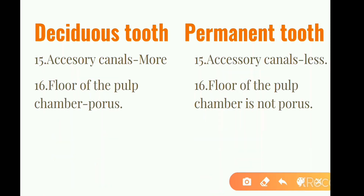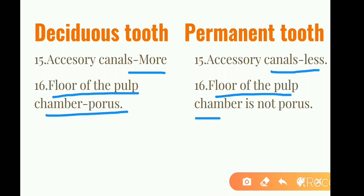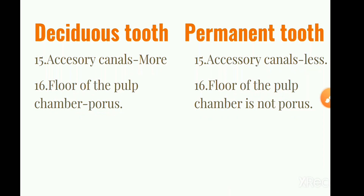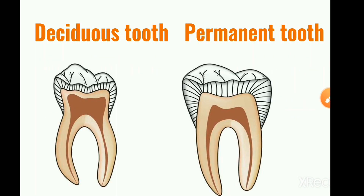In deciduous teeth, accessory canals are more numerous, while in permanent teeth they are fewer. In deciduous teeth, the floor of the pulp chamber is porous, but in permanent teeth the floor of the pulp chamber is not porous.